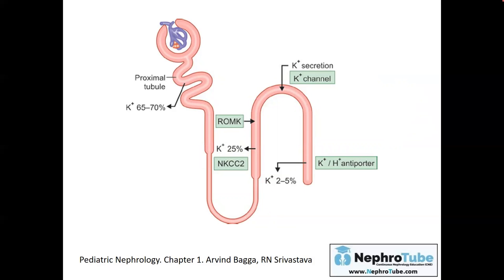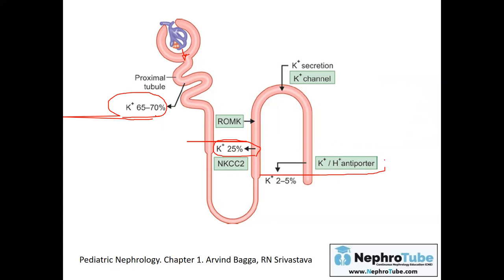The second important regulator of potassium is the nephron. Potassium is filtered through the glomerular basement membrane. About 65 to 70 percent is reabsorbed in the proximal convoluted tubule, about 25 percent is reabsorbed through the sodium-potassium-chloride co-transporter in the ascending loop of Henle, and some may be reabsorbed in exchange with hydrogen.